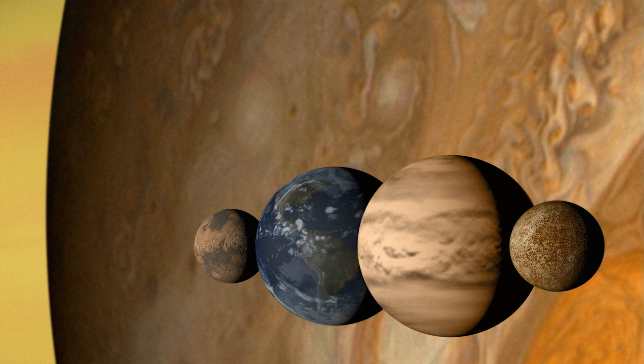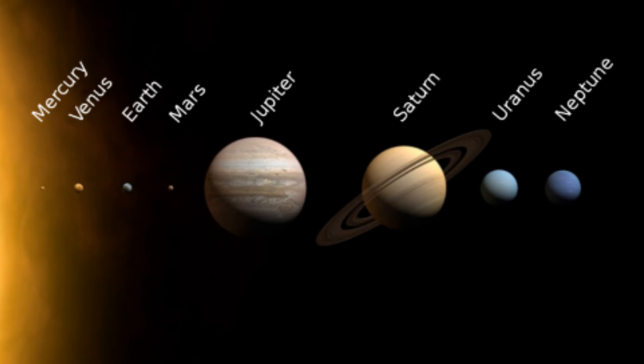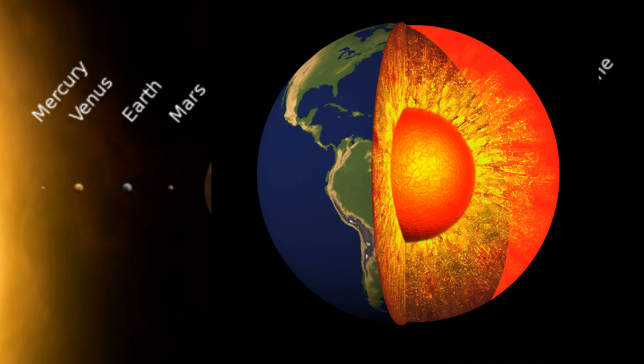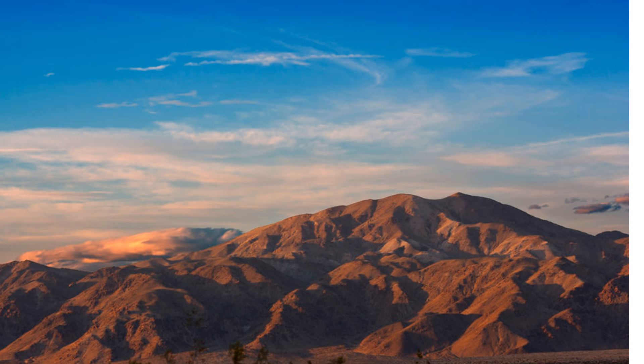They are called terrestrial planets because they are rocky and solid. In other words, they are Earth-like. These planets are composed of a core composed mostly of iron and a silicate mantle. Terrestrial planets can have canyons, craters, mountains, and volcanoes.